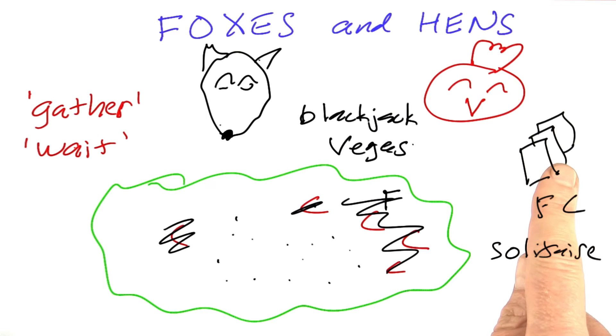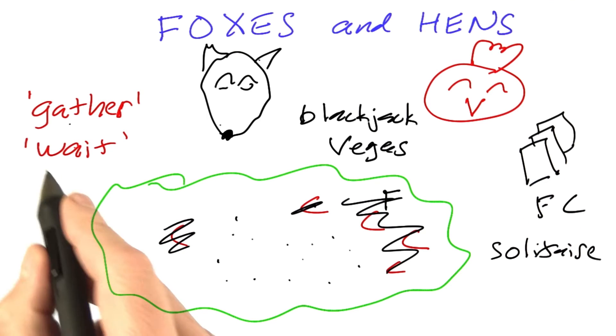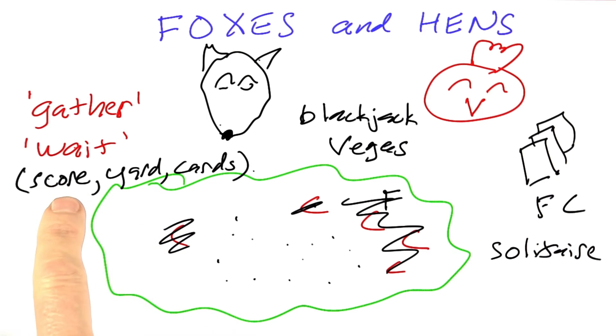So you don't know which one's going to come up next. So the state of the game then is defined by the score, the number of chickens I've gathered so far, the number of chickens currently in the yard, and the complete collection of cards that haven't been dealt yet. So we're assuming you have perfect memory for counting cards and you know exactly how many cards of each kind are left, but of course you don't know which one's going to come up next.